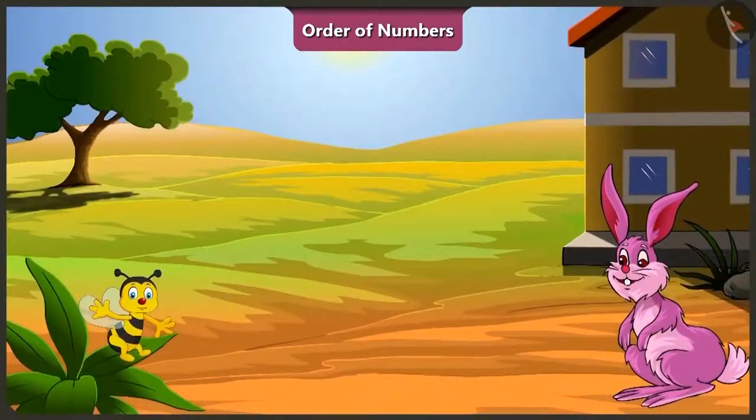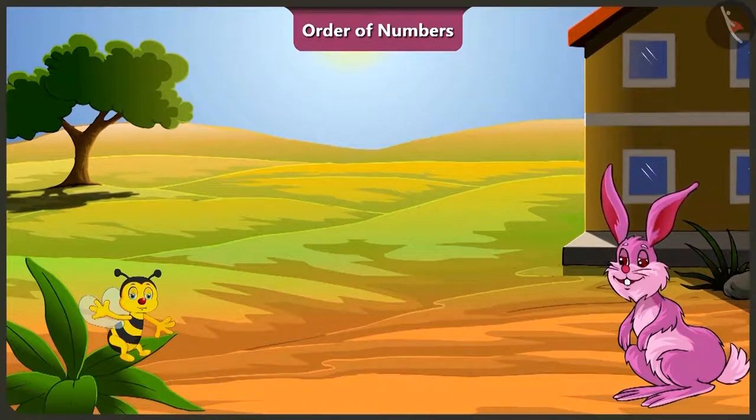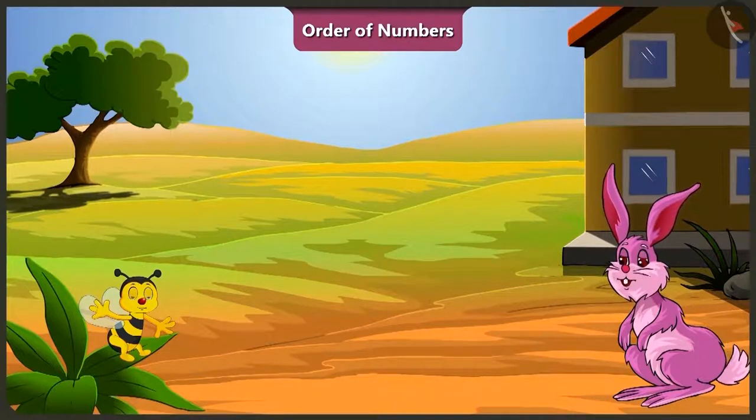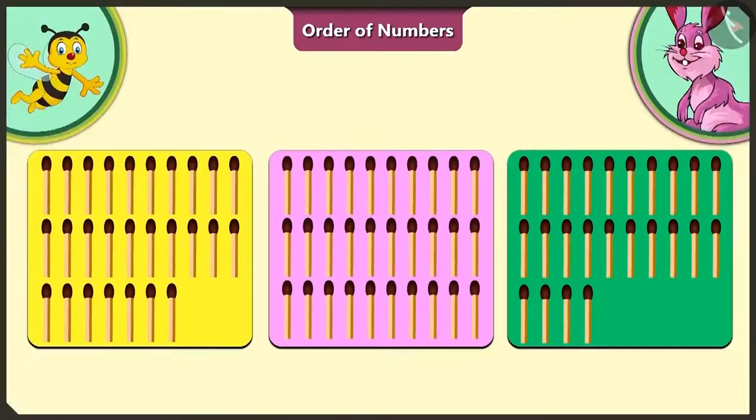Okay honey, now you have understood how to find the big number and the small number of two given numbers. Now tell me, here we have three cards with matchsticks arranged on them. How will you place the cards in order according to the number of matchsticks on them?